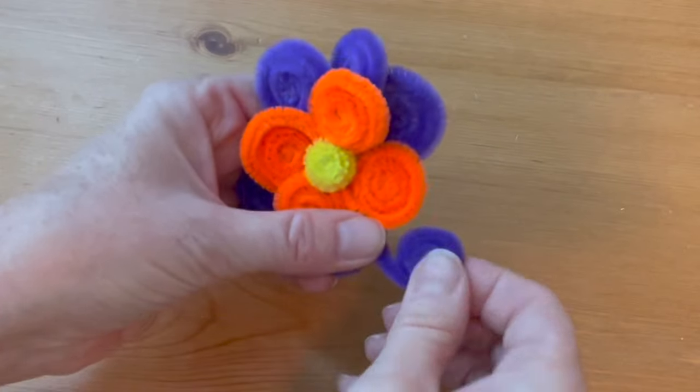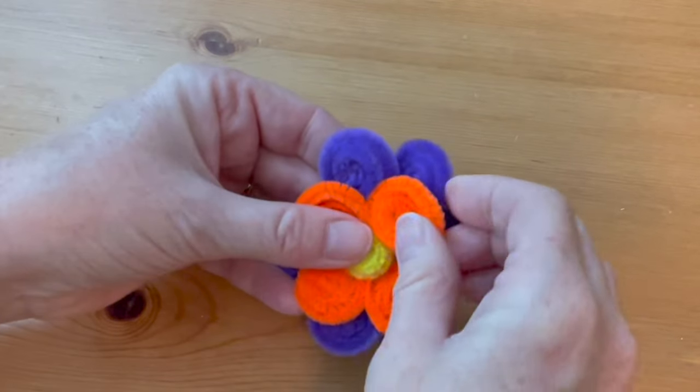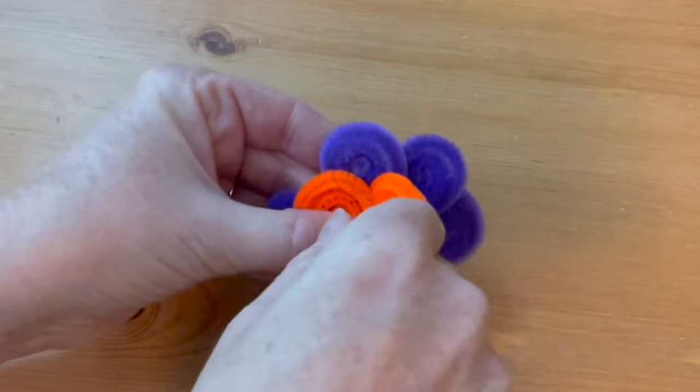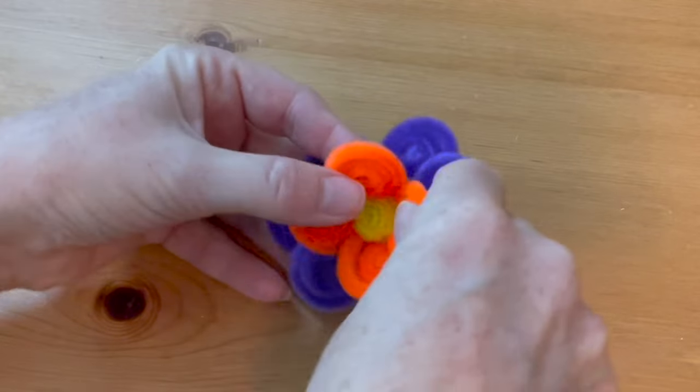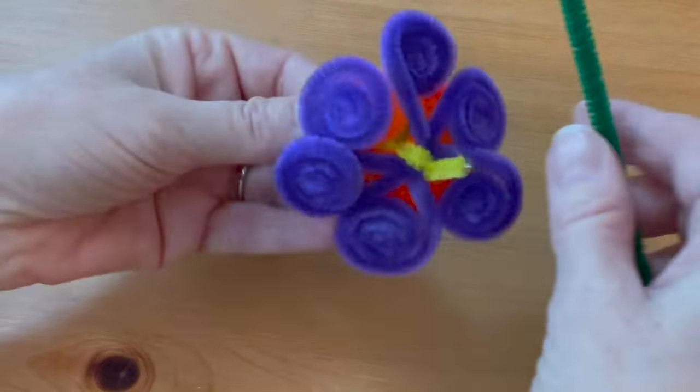When you have all your coils finished, you can bend the middle ones up in toward the center just a little bit, and then arrange the outward petals so that they're evenly distributed around the flower. Now flip the flower over.